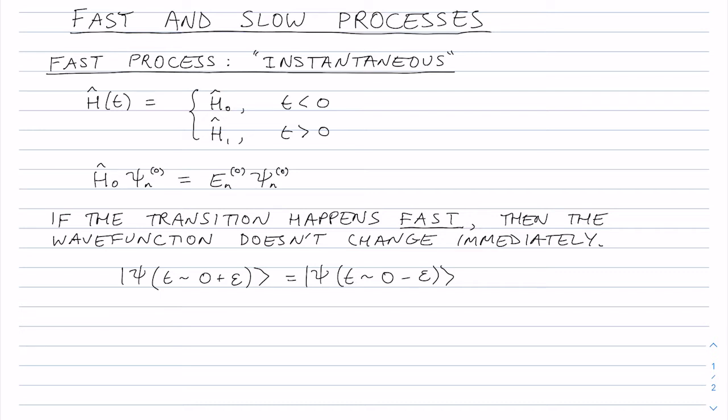The wave function at time t immediately after zero is the same as the wave function at time zero minus a little bit. Happens too quickly. And so we can write that wave function at time t equals zero as the eigenstate that it was originally in, and we can express that as a sum over the states of the final Hamiltonian, ψₘ₁. So these ψₘ₁ are eigenstates of H₁.